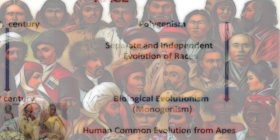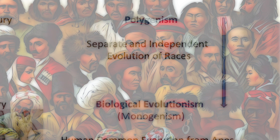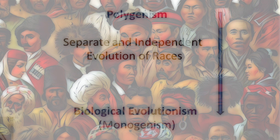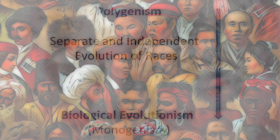Then you had the second group, those who believed that human beings evolved from several independent pairs of ancestors. This was known as polygenism — poly meaning many and genesis meaning origin, so many origins. These folks were known as polygenists, believing that human beings evolved from multiple species, and this group would later be known as pluralists.